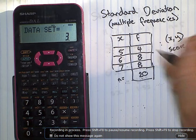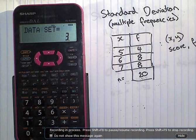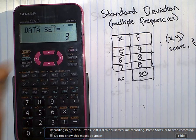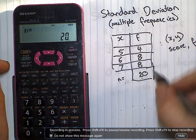To now check that we actually have the right frequencies in, what you want to do is go down to the N button here, above your zero. Access that using the alpha, zero. N equals 20, so we have the right amount of data entered in.